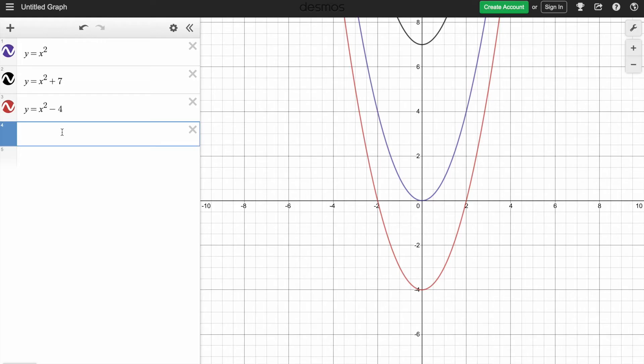Let's say I want to move it left or right. I want to move the graph left, then I will say y is equal to, in brackets, x minus four, and then square outside.